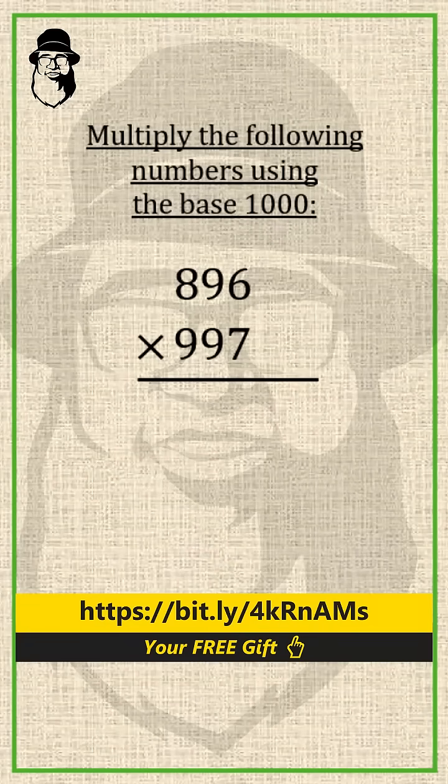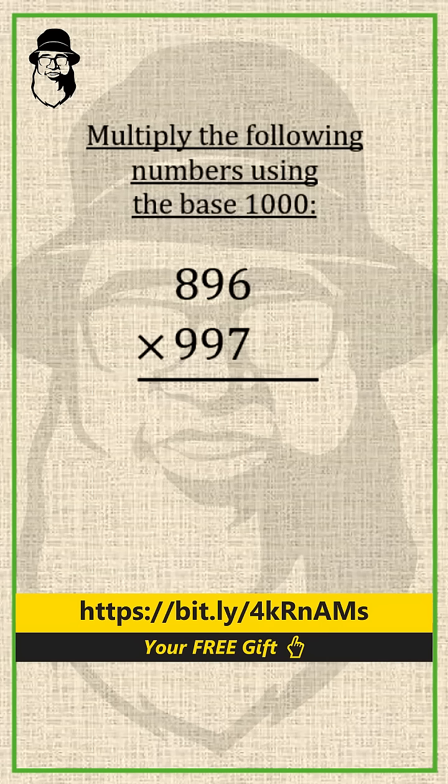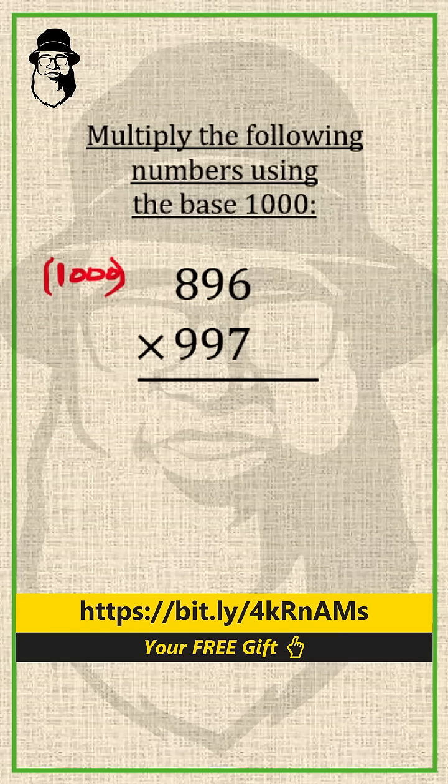Multiply the following numbers using the base 1000. Now our base is 1000. It has three zeros. So the second part of the answer will have three digits in it.